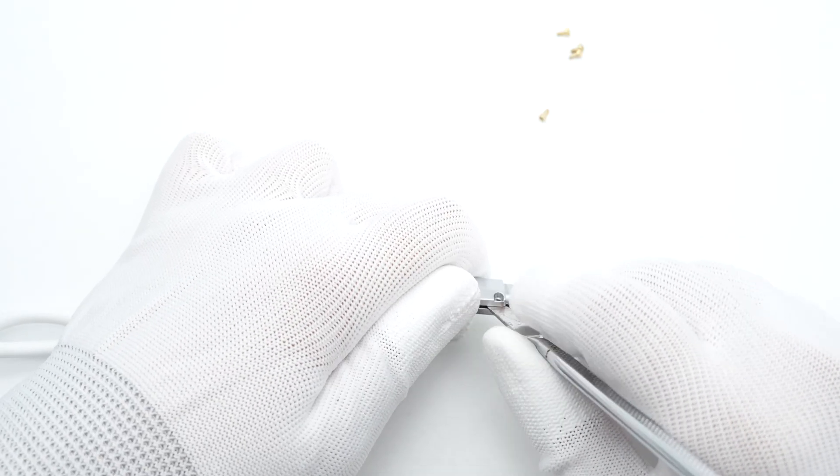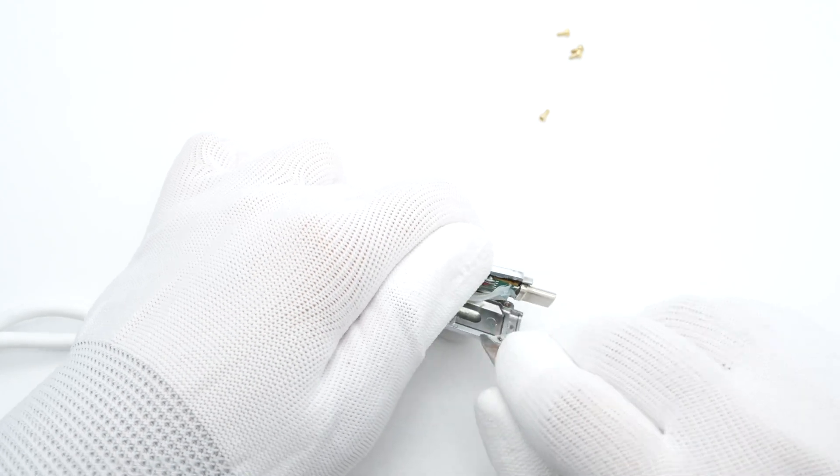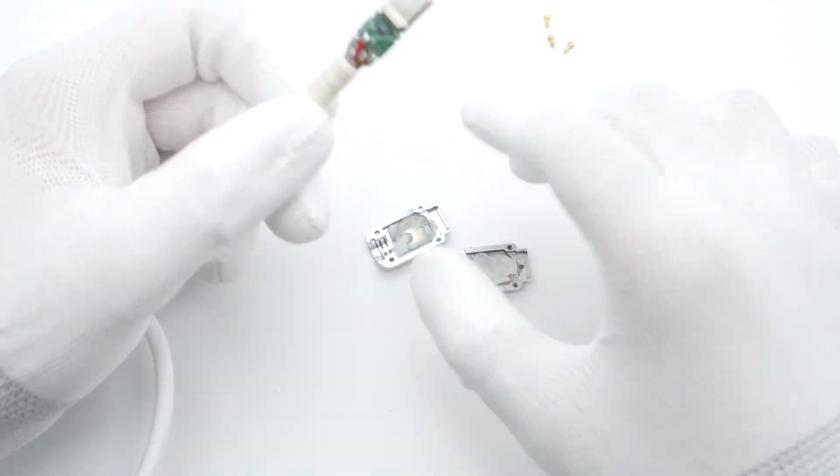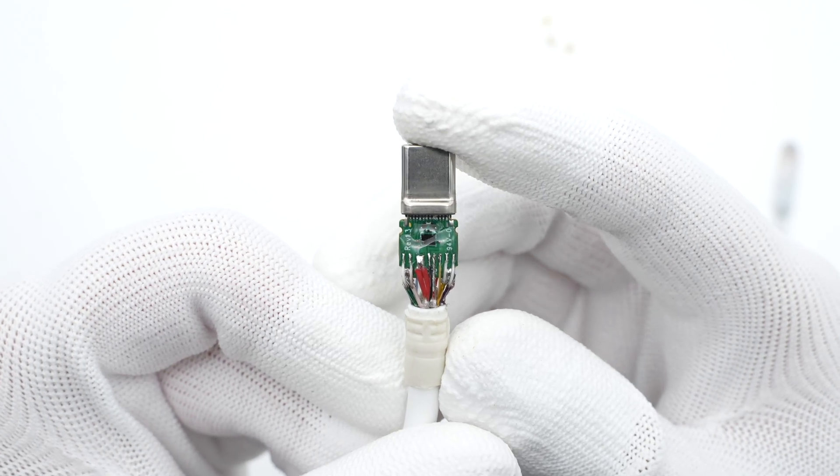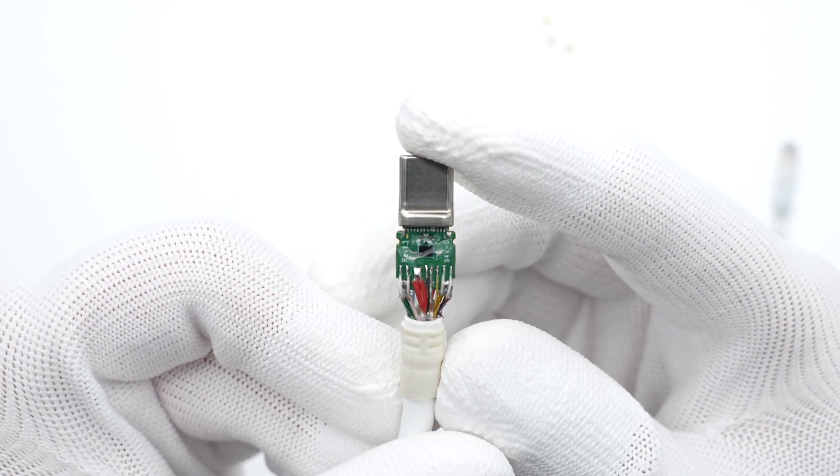Continue to remove the metal case of the other USB-C connector. The internal structure is pretty similar, but there is an additional E-Marker chip.